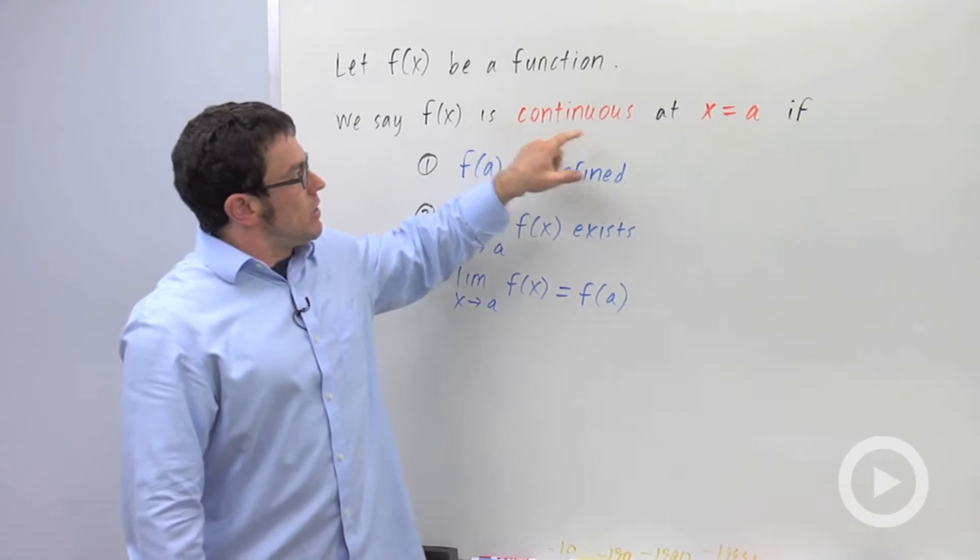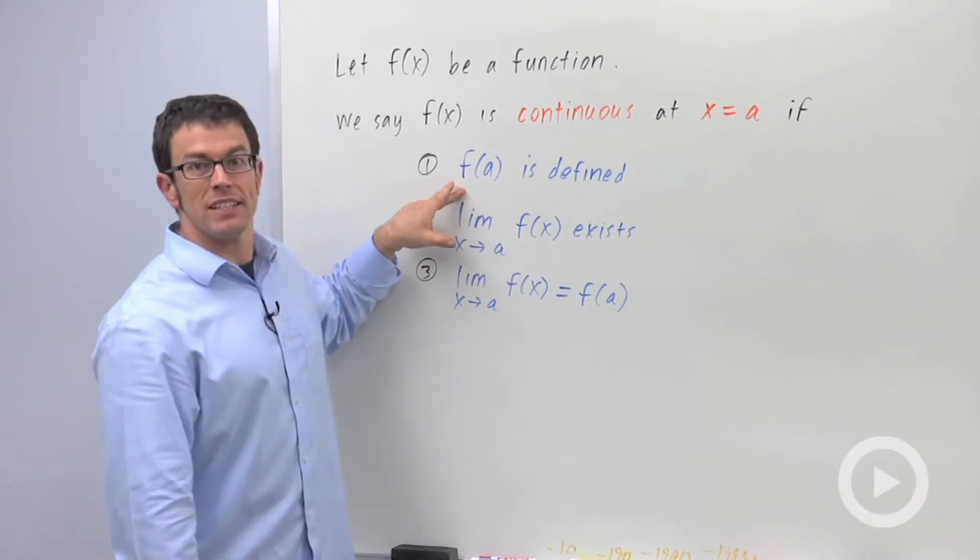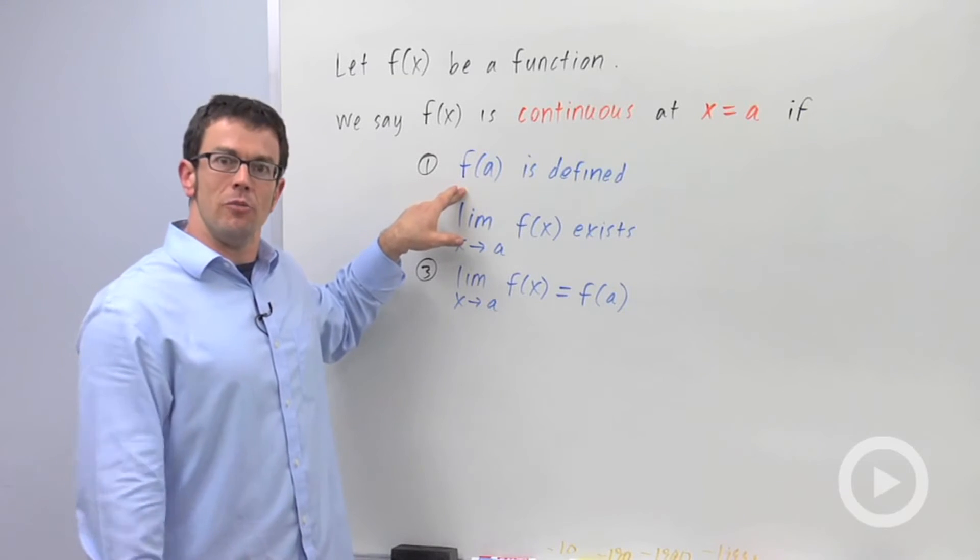We say that f of x is continuous at the point x equals a if three things are true. First, f of a is defined, so a has to be in the domain of the function f.